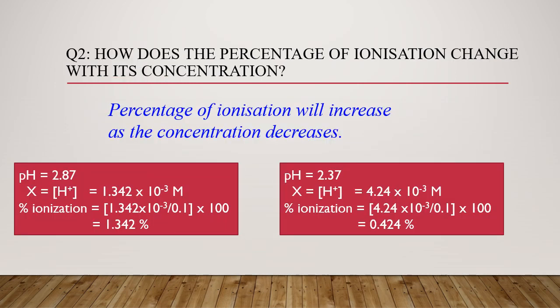Question asks: how does the percentage of ionization change with its concentration? So you compare, this 2.87, this one is 2.37. And then this is the percentage of ionization. Did you notice that when the pH, pH increase, pH increase means higher concentration. No, no, no, lower concentration because acid. When concentration increases, the percentage of ionization decreases.